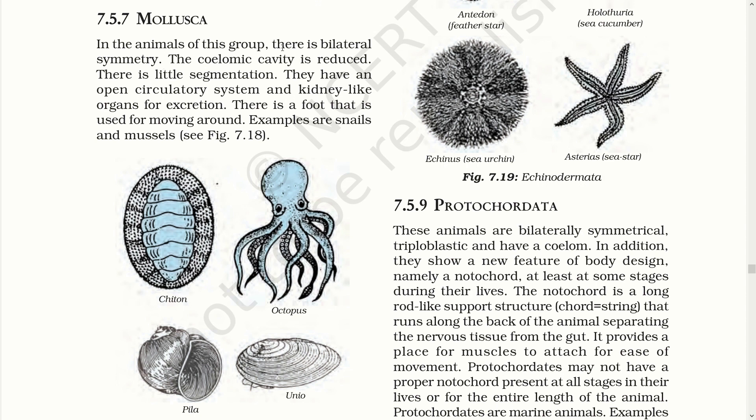Mollusca. In animals of this group there is bilateral symmetry. The coelomic cavity is reduced. There is little segmentation. They have an open circulatory system and a kidney-like organ for excretion. There is a foot used for moving around. Examples are snails and mussels.